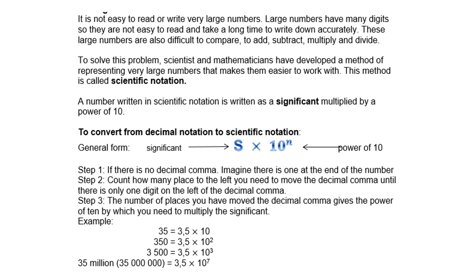This method is called scientific notation. A number written in scientific notation is written as a significand multiplied by a power of 10. To convert from decimal notation to scientific notation, the general form is the significand S times 10 to the power of N. Step 1: if there is no decimal comma, imagine there is one at the end of the number. Step 2: count how many places to the left you need to move the decimal comma until there is only one digit on the left of the decimal comma. Step 3: the number of places you have moved the decimal comma gives the power of 10 by which you need to multiply the significand.